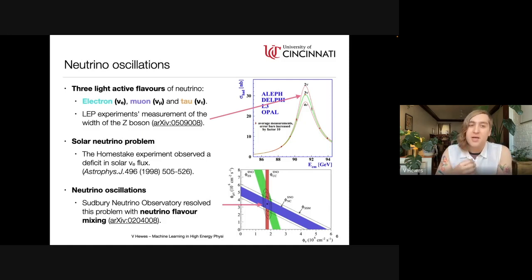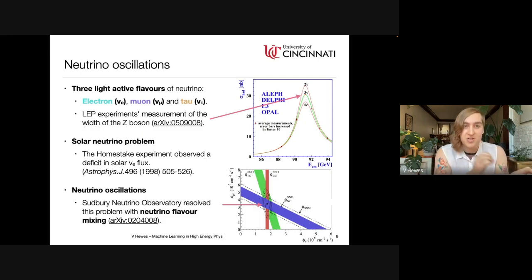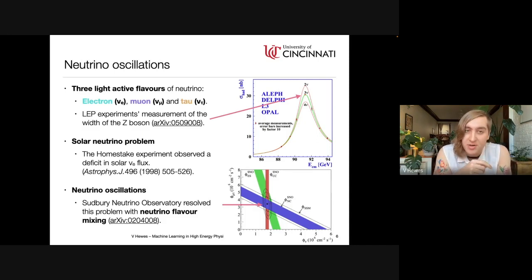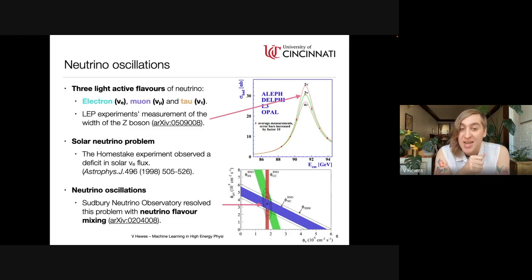This inconsistency was eventually resolved by the Sudbury Neutrino Observatory and Super-Kamiokande, which solved the problem using what's called neutrino flavor mixing. These experiments measured not just the electron neutrino flux but also the neutral current flux, which is flavor-insensitive. Even though there was a deficit in electron neutrinos, the overall neutral current flux was consistent with predictions. This is called adiabatic flavor conversion — neutrinos are produced as electron flavor in the sun but arrive on Earth as a combination of all three flavors.